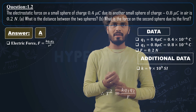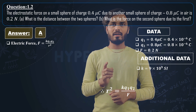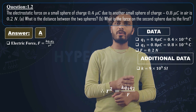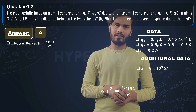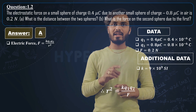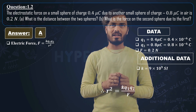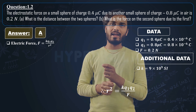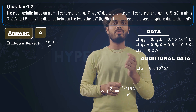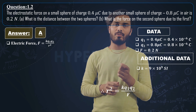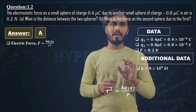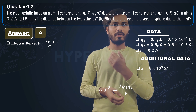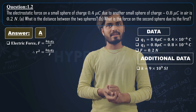Second step: Rearrange to get r square equals k q1 q2 upon F. We exchanged terms — r square which was in the denominator is brought forward, and F from the left-hand side is moved to the right-hand side as the denominator.